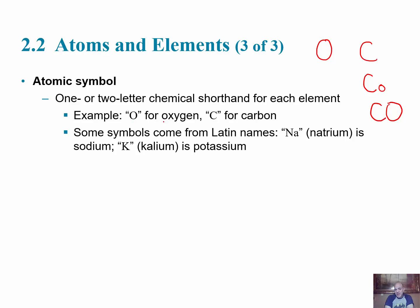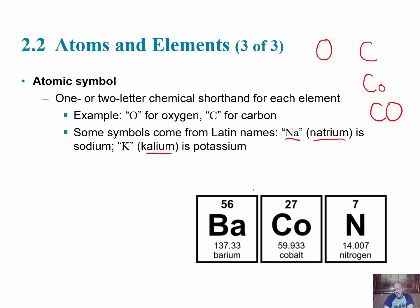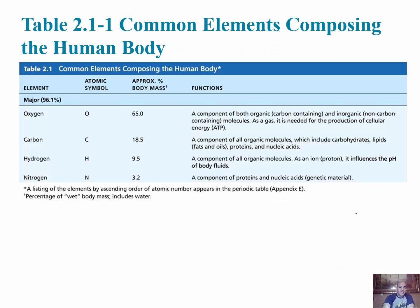Some symbols come from the element's first letter, like O for oxygen and C for carbon. Others come from Latin names — sodium's symbol is Na from its Latin name natrium, since S is already used for sulfur. Potassium uses K from kalium since P is taken by phosphorus. Each box on the periodic table shows the atomic number (number of protons), the symbol, and the decimal atomic weight, which is the average mass of the element's isotopes.